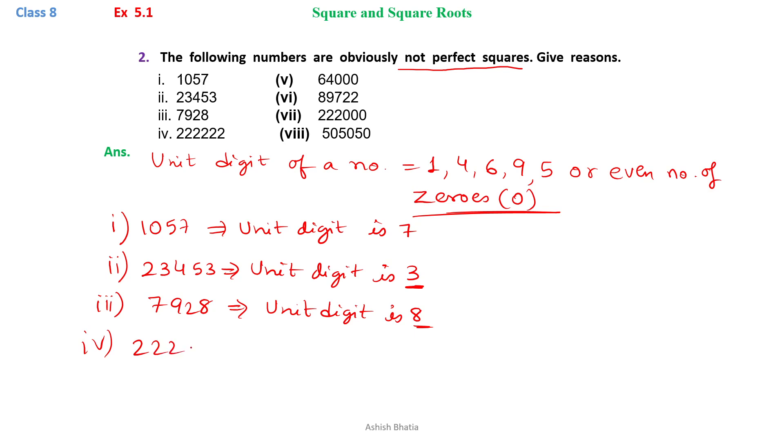Then the fourth one is 222222. We can see that the unit digit here is 2, so it can't be a perfect square.